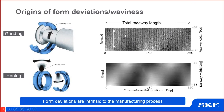A second aim of honing is to remove shorter wavelength form deviations. Still, we will never get a perfect bearing — we can still get some longer wavelength deviations after honing. As you can see in this picture, we still have some long wavelength black areas. So after having said that, we can say that form deviations — meaning waveness — are intrinsic to the manufacturing process.